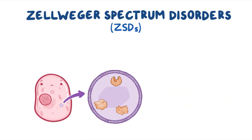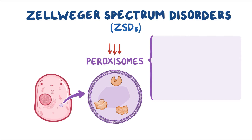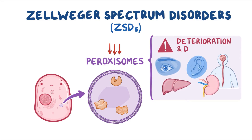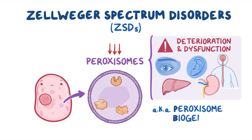A low level of peroxisomes in the body causes visual, auditory, and neurological deterioration, as well as liver and kidney dysfunction. For this reason, ZSDs are also known as Peroxisome Biogenesis Disorders, or PBDs.